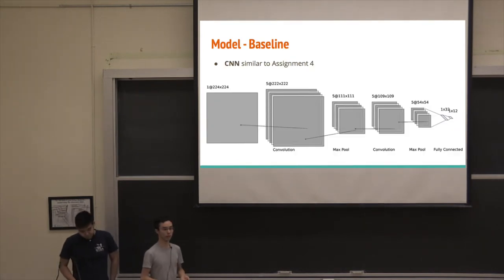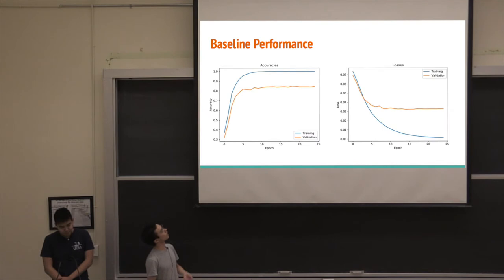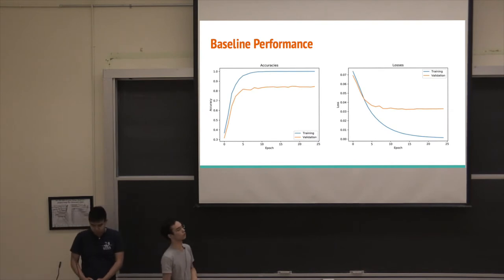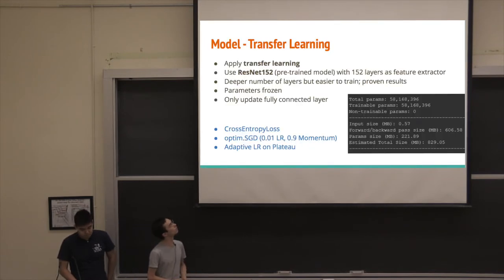So for our baseline model, we used a convolutional neural network, very similar to assignment four. So this consisted of two convolutional layers, each followed by two max pools, and two fully connected layers at the very end. And the performance of this was okay, considering it was just a baseline. We achieved a validation accuracy of approximately 80%. This is obviously significantly better than a random percentage of approximately 8%, which we would get for 12 different classes.